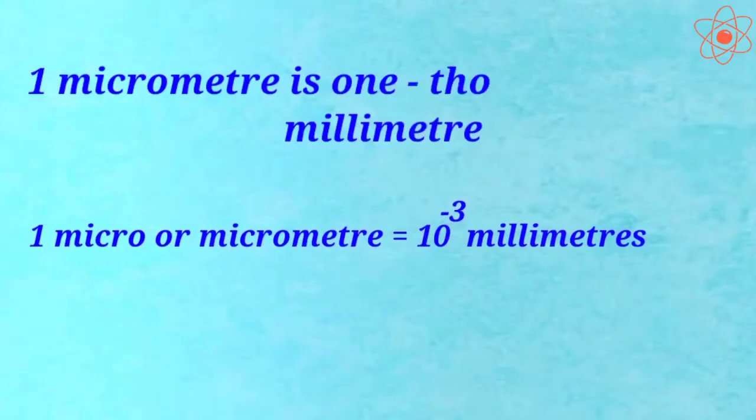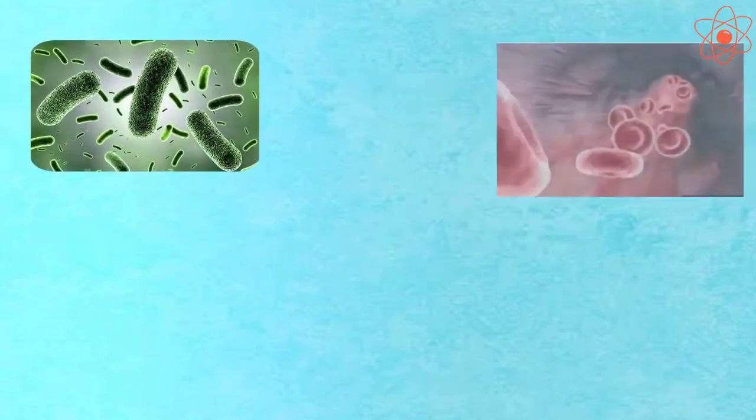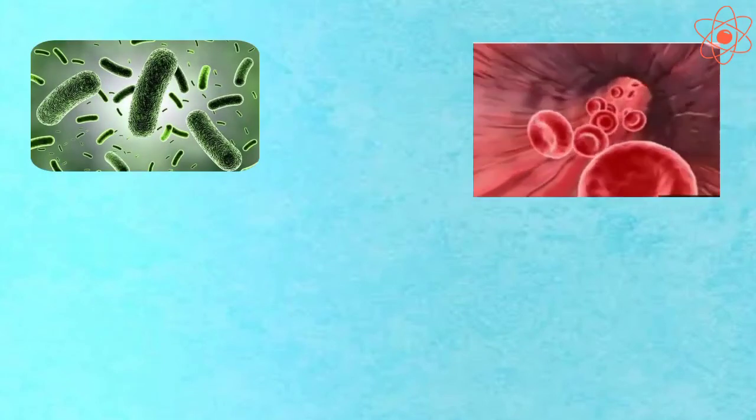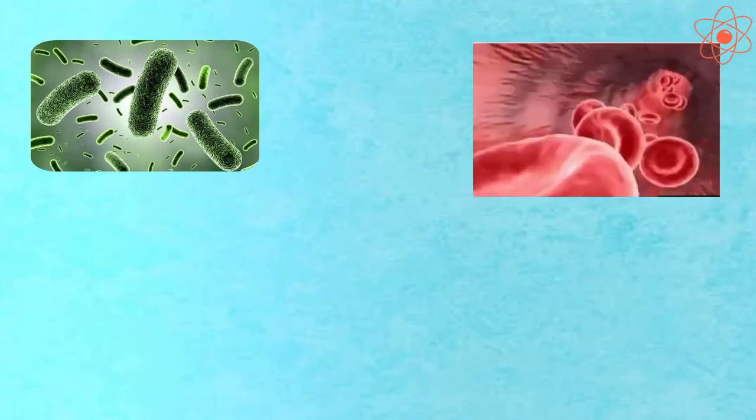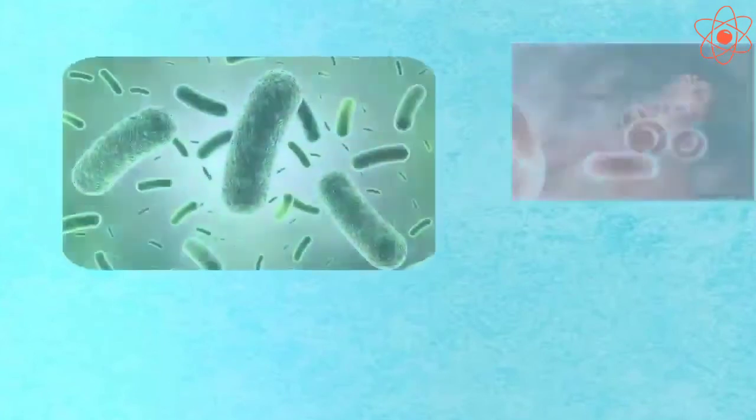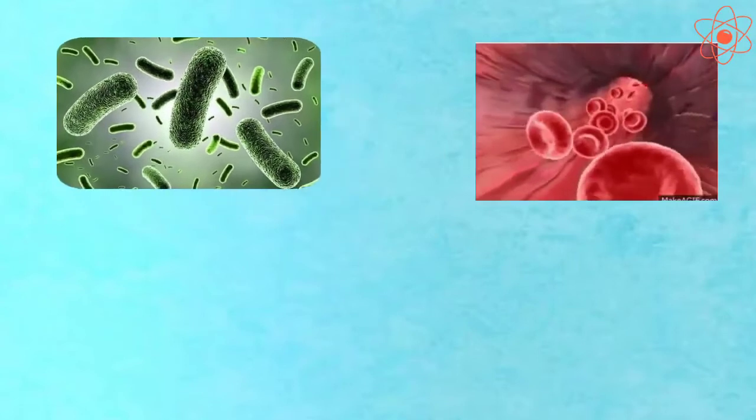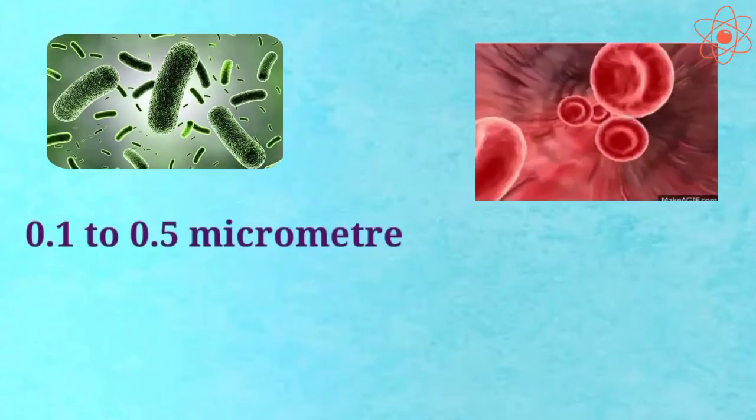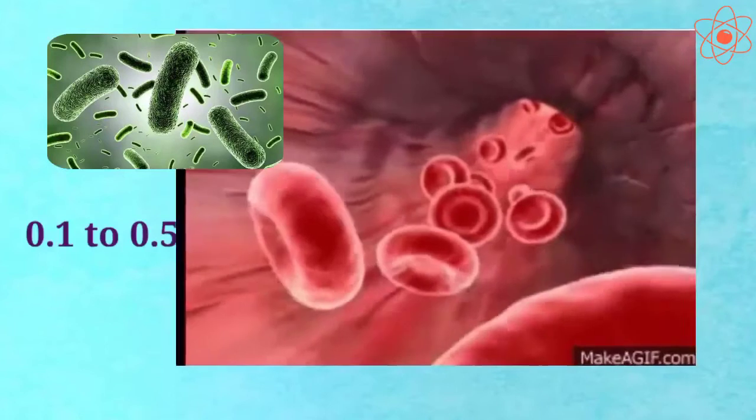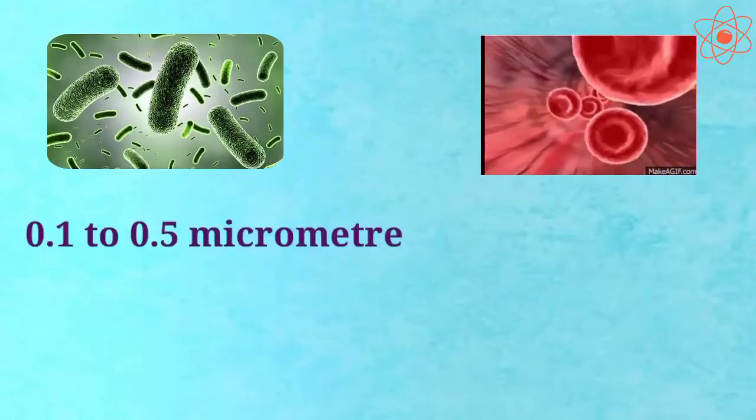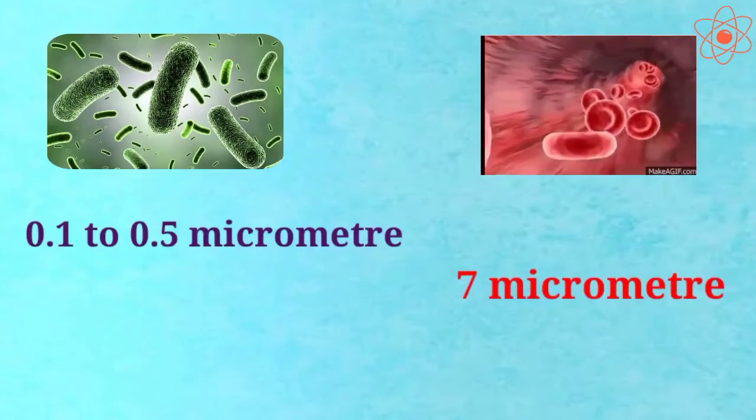One micrometer is one thousandth of a millimeter. Bacteria and red blood cells are some examples of small sized cells. A bacteria cell ranges in size from 0.1 to 0.5 micrometer, whereas red blood cell is about 7 micrometer in size.